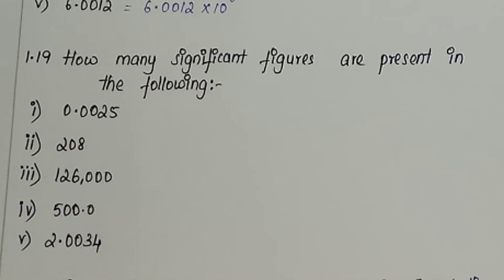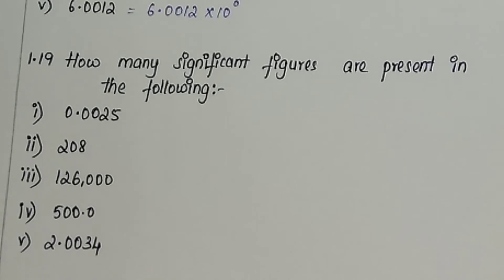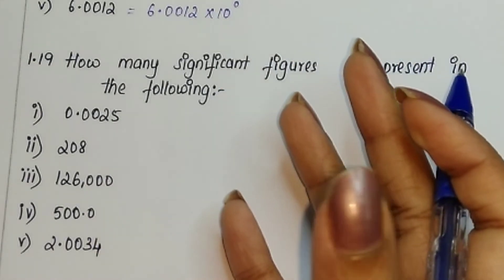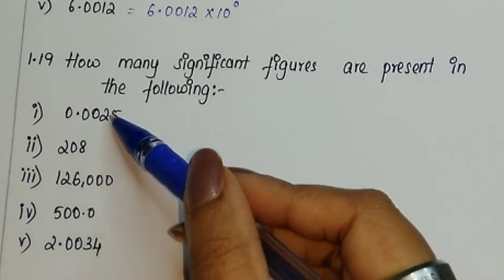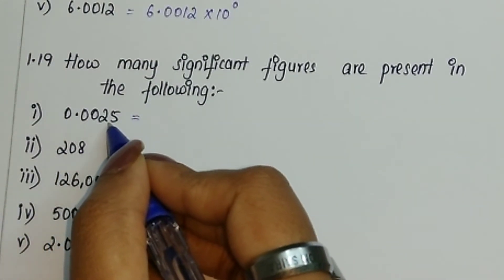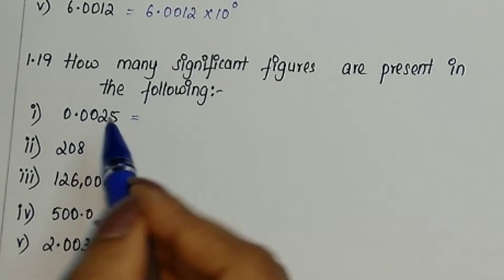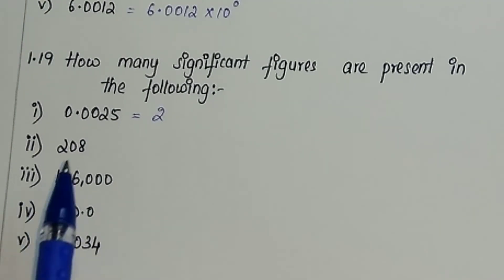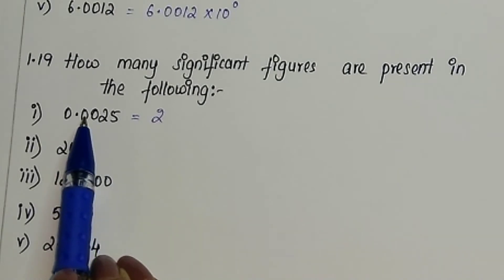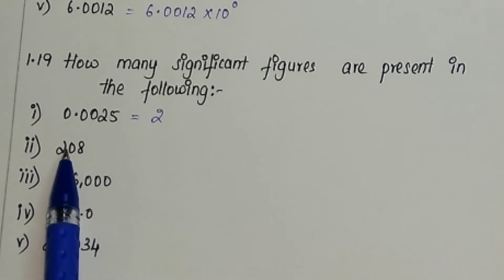Question 1.19 deals with counting significant figures. Certain values are given and we need to find how many significant figures each has, following the rules in the textbook. The first number is 0.0025 — here we have only two significant figures, which are the non-zero digits 2 and 5. The zeros before the non-zero digits are not significant, so the answer is 2. The second number has a zero present between two non-zero digits, so that zero is also significant.